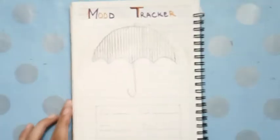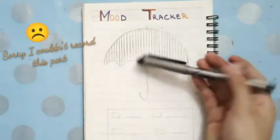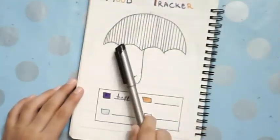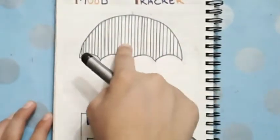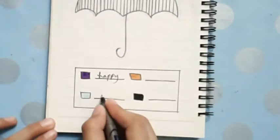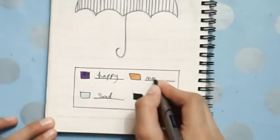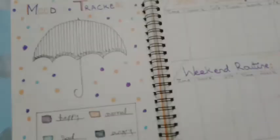Sorry I forgot to record this part, but over here I made this umbrella and I have 31 boxes because there are 31 days in August. For the purple color I choose happy, and orange color normal, blue color sad, and the black color for angry.